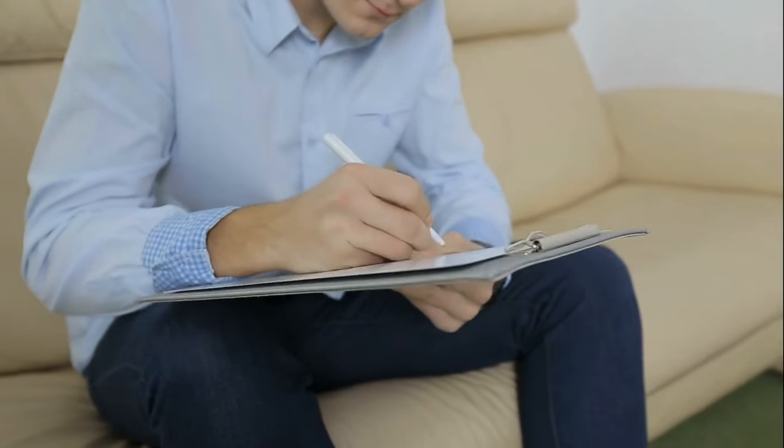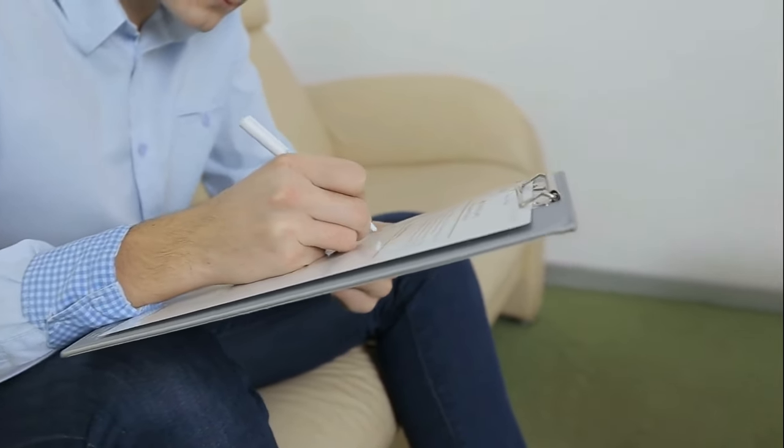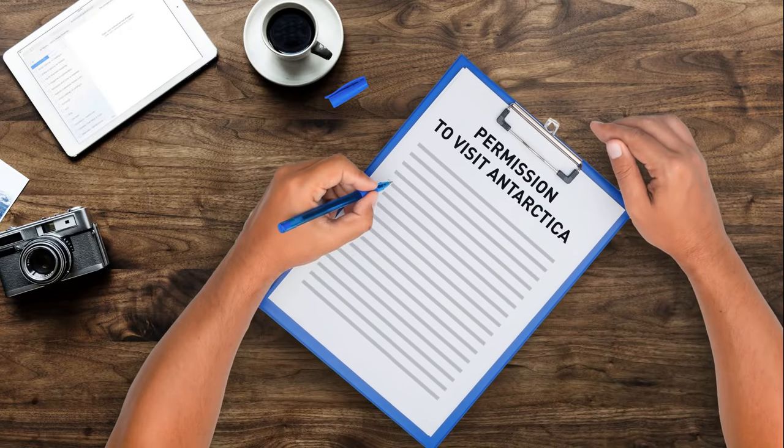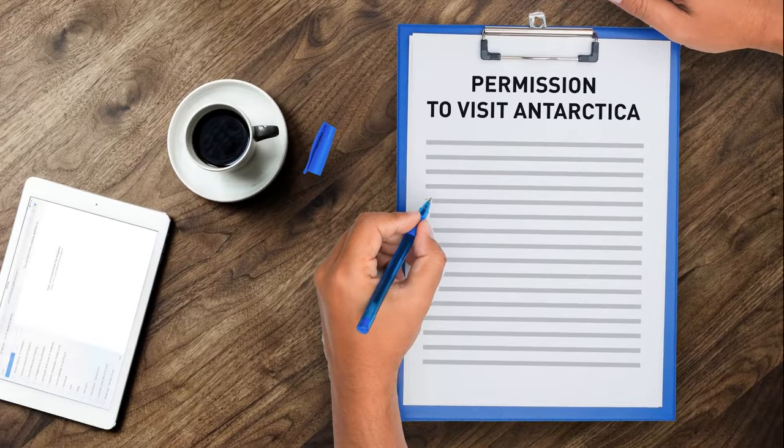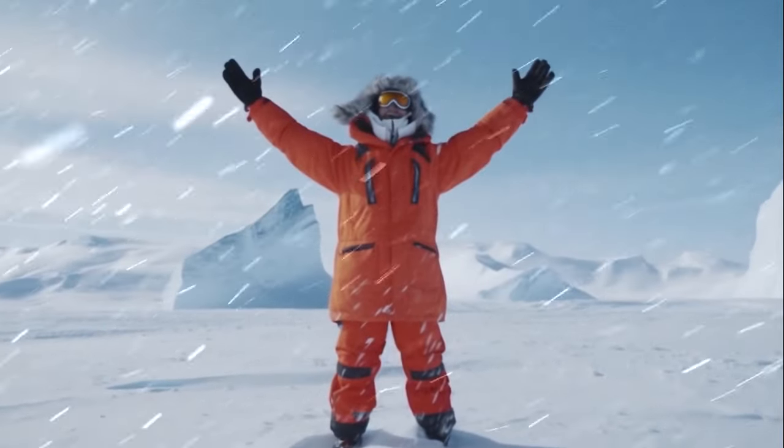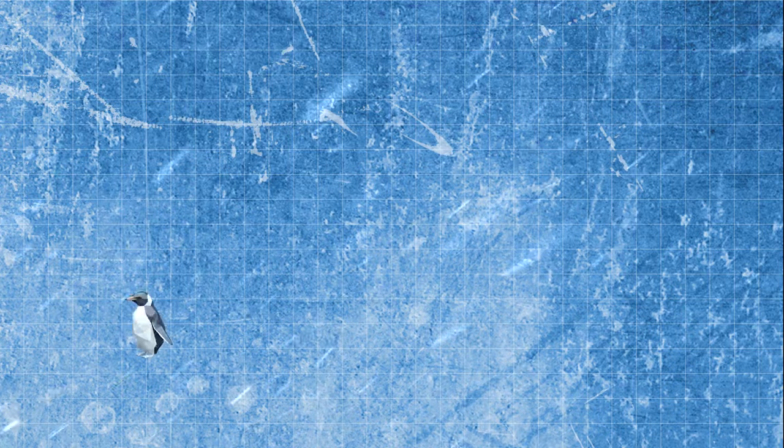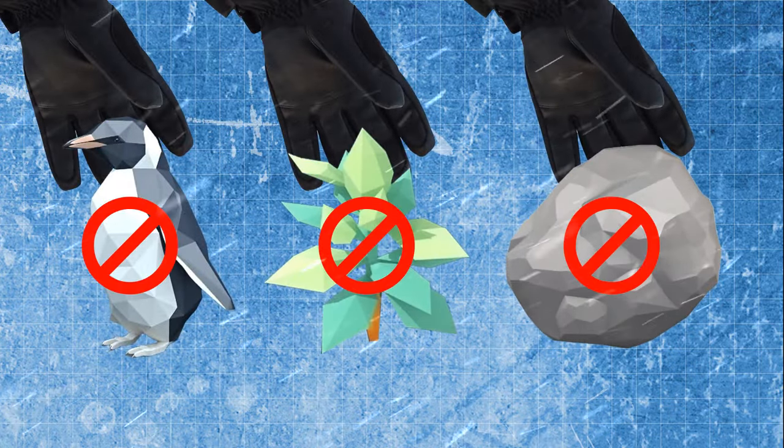If you're still itching to go to Antarctica, getting permission isn't exactly a walk in the park. U.S. citizens, for example, need to complete a special form and send it to the Office of Ocean and Polar Affairs. And once you're there, you'll need to follow some strict guidelines to protect the environment, like not disturbing any wildlife or taking souvenirs like rocks, plants, or animals.